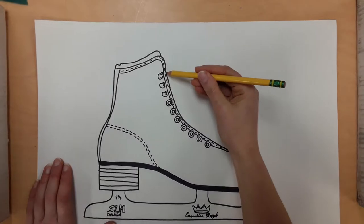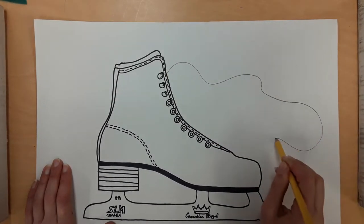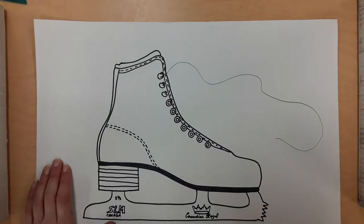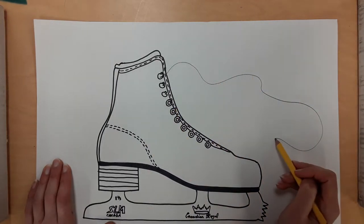Start at an eyelet or a hook. Then draw a wiggly line. Try to fill in the space. When you get to the end, turn around and go back.